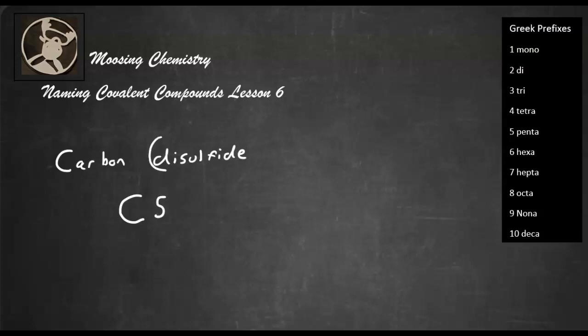And you see this di right here? That di means the number 2. So this would be carbon disulfide, which would be called CS2. All right, let's try another one real quickly.